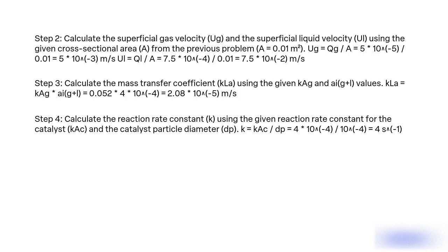Step 4: Calculate the reaction rate constant KA using the given reaction rate constant for the catalyst KAC and the catalyst particle diameter DP. KA = KAC / DP = 4 × 10⁻⁴ / 10⁻⁴ = 4 s⁻¹.